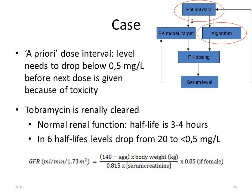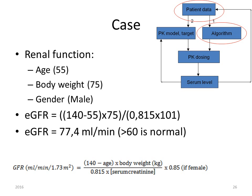We also have to calculate the a priori dosing interval. Tobramycin levels need to drop below 0.5 milligrams per liter before the next dose because of toxicity. Tobramycin is renally cleared; with normal renal function its half-life is 3 to 4 hours, and in 6 half-lives levels drop from 20 to less than 0.5 milligrams per liter. To calculate renal function we use the Cockcroft-Gault formula: GFR = (140 − age) × body weight / (0.815 × serum creatinine), multiplied by 0.85 for female patients.